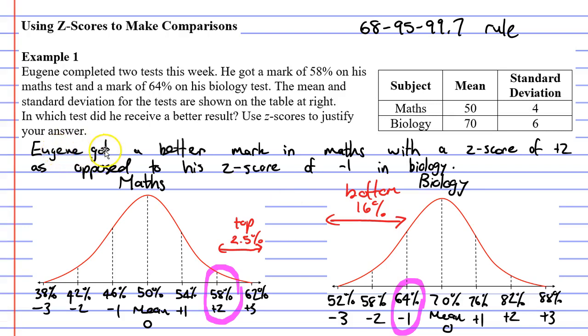So we're going to say that Eugene got a better mark in maths, with a z-score of positive 2, as opposed to his z-score of negative 1 in biology. I'd like to point out that we only spoke about z-scores. We didn't speak about these percentages here. And to be honest, you don't need to talk about these. Anyway, that concludes our video on example 1. Remember to read the description below for links to workbooklets that relate to this video.